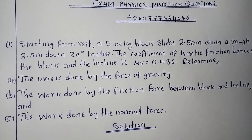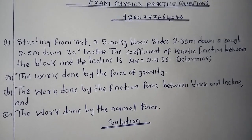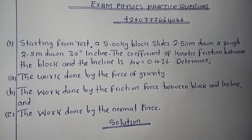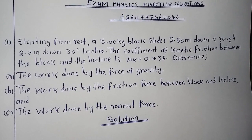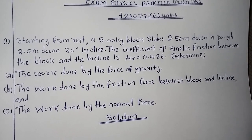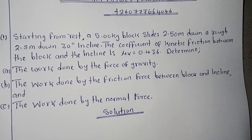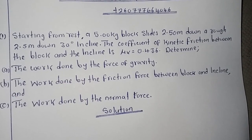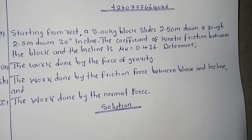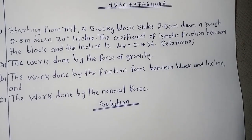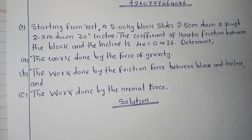In physics on Newton's laws, forces, normal forces, as well as finding the work done by a force. The question states: starting from rest, a 5 kg block slides 2.5 meters down a rough 30-degree incline. The coefficient of kinetic friction between the block and the incline is μk = 0.436. Determine the work done by the force of gravity, the work done by the friction force between block and incline, and the work done by the normal force.